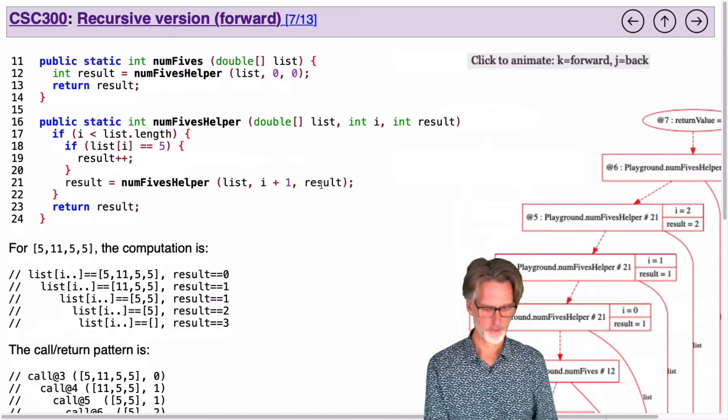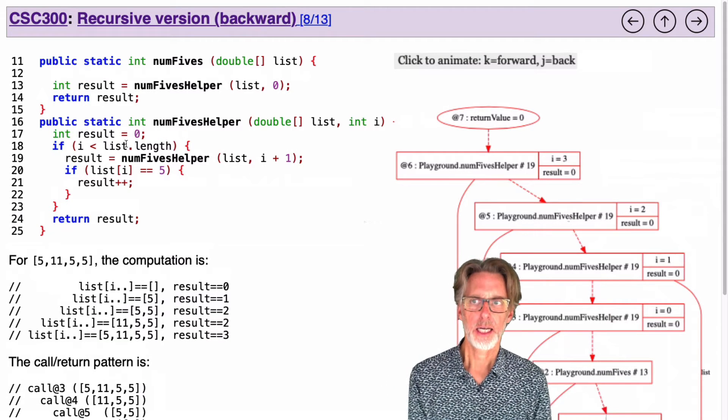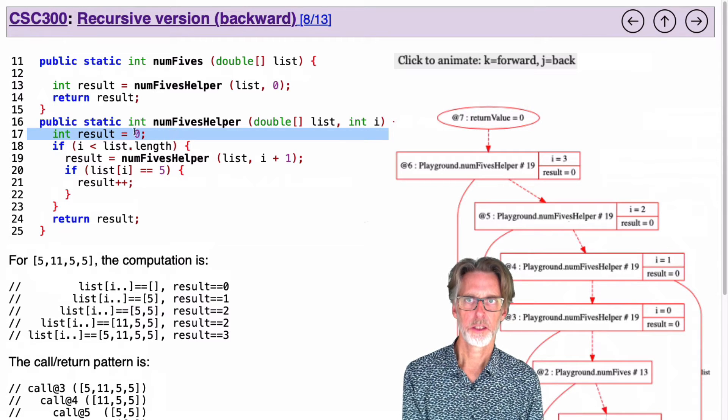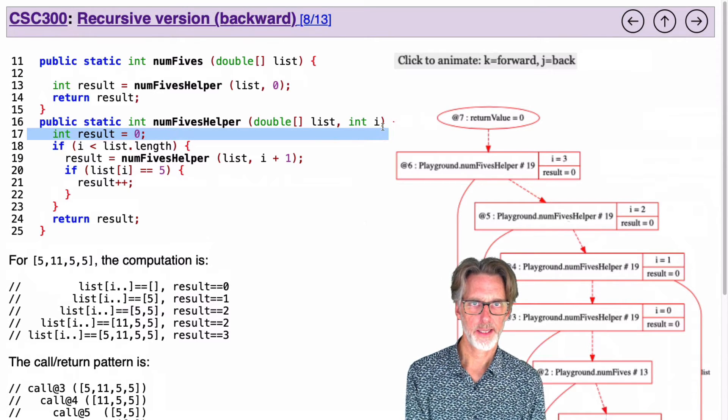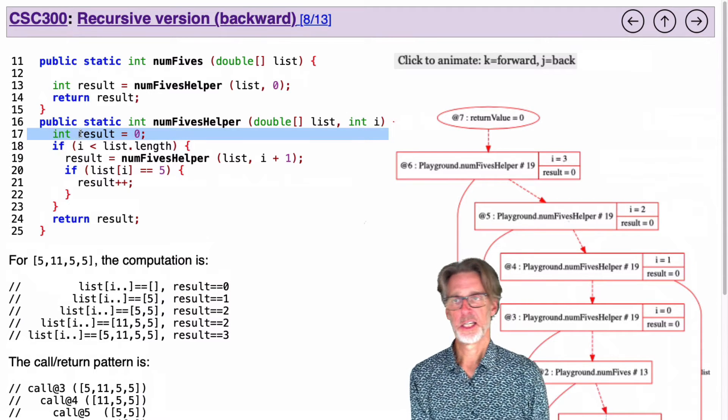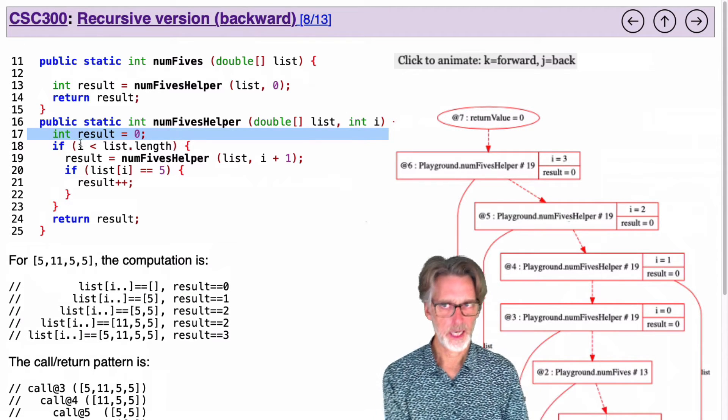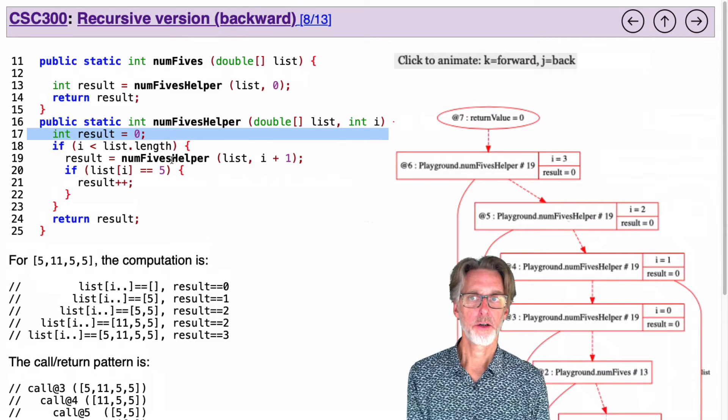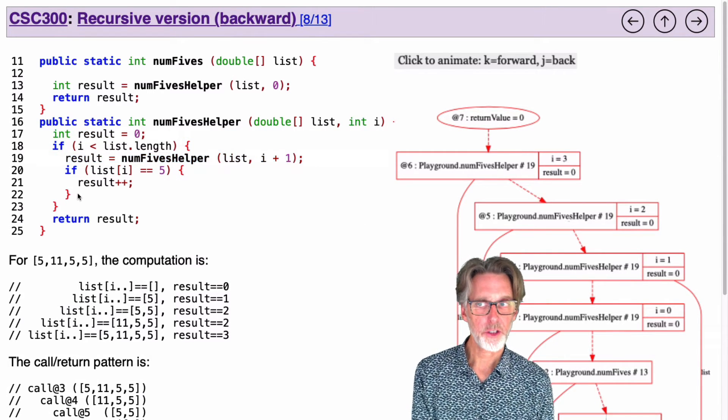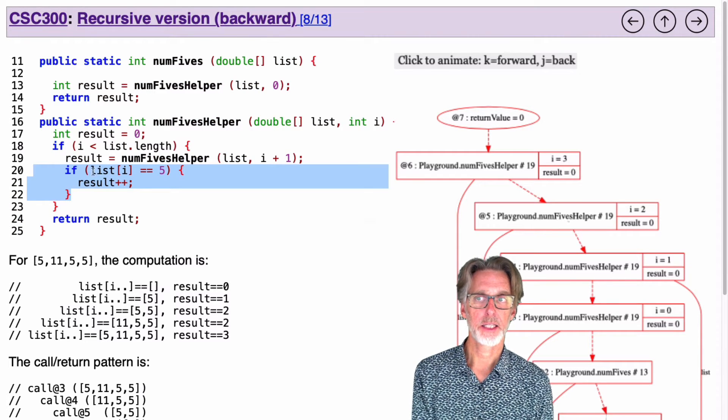In the backwards version, what do I do? Well, I initialize the result to zero here. So note that I don't have a result parameter, so I have a result local variable. And if I have not yet gone off the end, I first do the recursive call, and after the recursive call, I then add in the result.